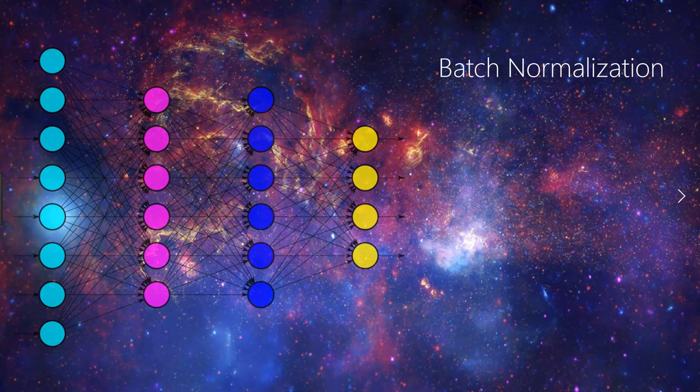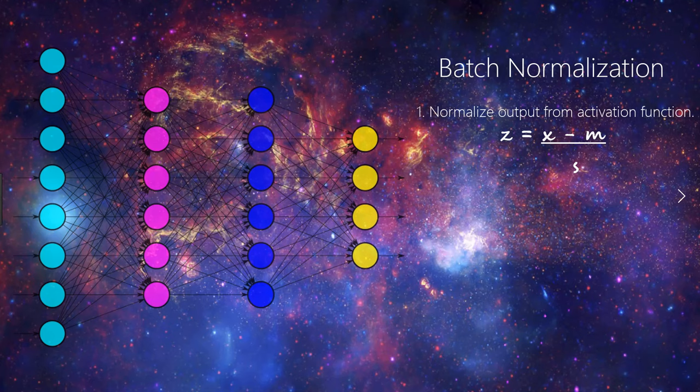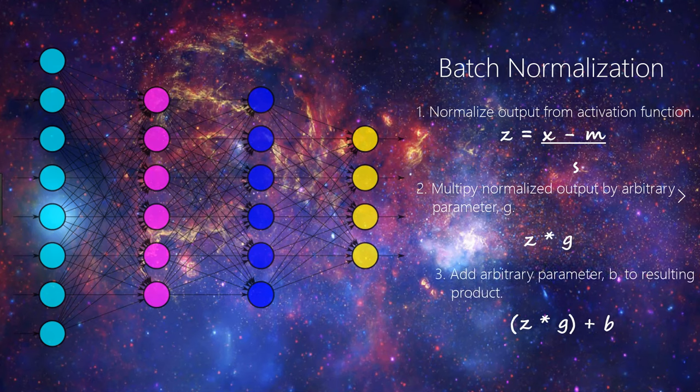This is where batch normalization comes into play. Batch norm is applied to layers that you choose to apply it to within your network. When applying batch norm to a layer, the first thing batch norm does is normalize the output from the activation function. Recall from our video on activation functions that the output from a layer is passed to an activation function, which transforms the output in some way depending on the function itself, before being passed to the next layer as input. After normalizing the output from the activation function, batch norm then multiplies this normalized output by some arbitrary parameter, and then adds another arbitrary parameter to this resulting product.